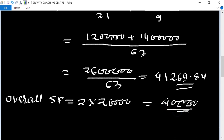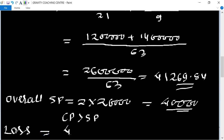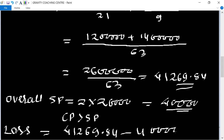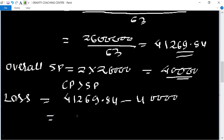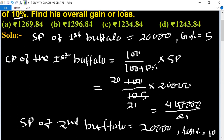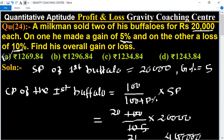Since CP is greater than SP, there is an overall loss. Loss equals CP minus SP equals 41,269.84 minus 40,000 equals 1,269.84. Therefore, the required overall loss is rupees 1,269.84, which is the correct answer.